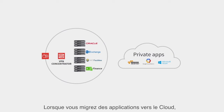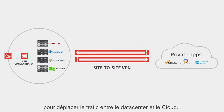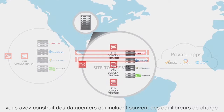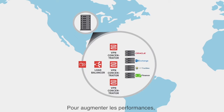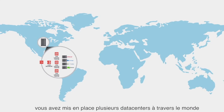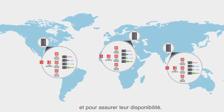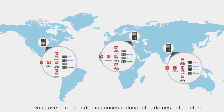As you move apps to the cloud, you may also have to build a site-to-site VPN tunnel to take traffic from the data center to the cloud. To make these apps reachable, you've built data centers that often feature load balancers as well. And to ensure high performance, you've created multiple data centers around the world.